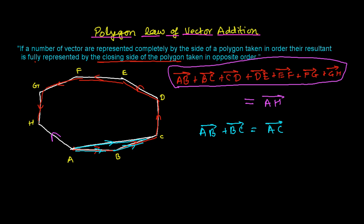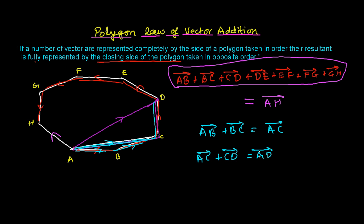Once again, if I now take triangle ACD, then in that triangle the side AC and side CD give the resultant as the third side AD. So we can write: AC + CD = AD.